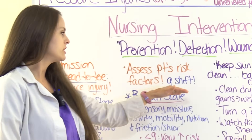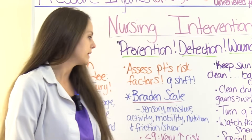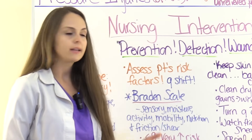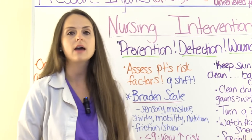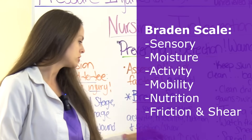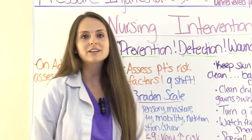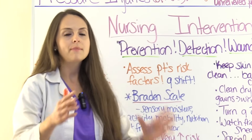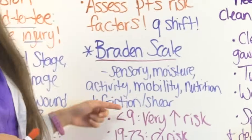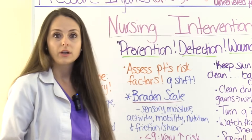Every shift, you'll assess the patient's risk factors for potential pressure injury. In the hospital, we use the Braden scale every shift when documenting. The Braden scale looks at six categories: sensory, moisture, activity, mobility, nutrition, and friction and shear — essentially all the risk factors we discussed. The scoring ranges from zero to 23; a score of nine or less indicates very high risk, while a score of 19 to 23 indicates essentially no risk.